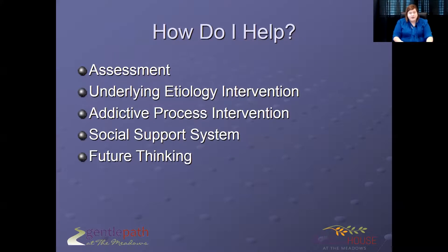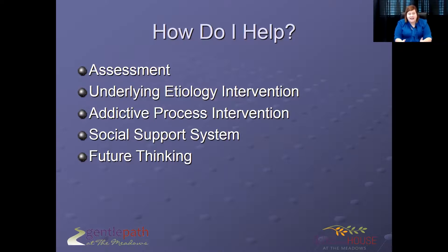So it's not just 'wow, isn't this awful, don't young adults have it bad' — let's talk about how you can help. There are a couple of phases: a good clear assessment, underlying etiology intervention, addictive process intervention, building social systems, and thinking about the future — because young adults have a lot of future left to think about.